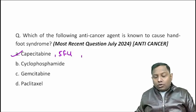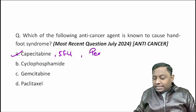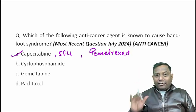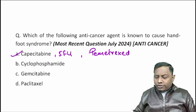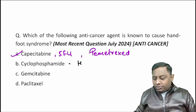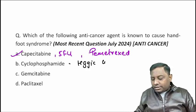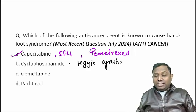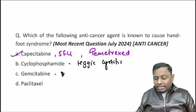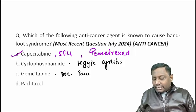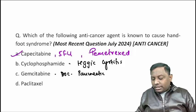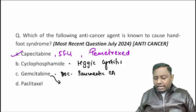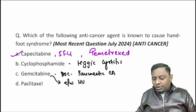In the next exam, another question can appear about pemetrexed — 5-finger pemetrexed. Cyclophosphamide is associated with hemorrhagic cystitis — remember that. Gemcitabine is associated with pancreatic cancer and is in fact the drug of choice in pancreatic cancer. Along with the usual side effects like bone marrow suppression and alopecia, gemcitabine is also associated with hemolytic uremic syndrome.